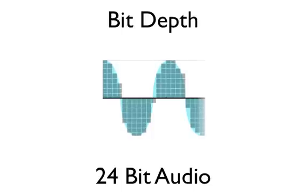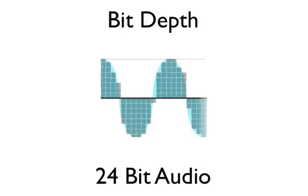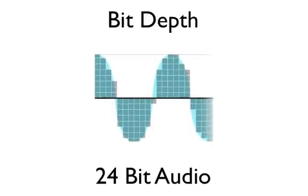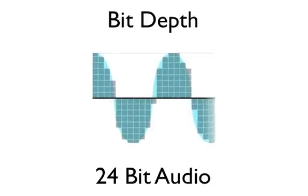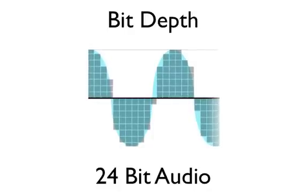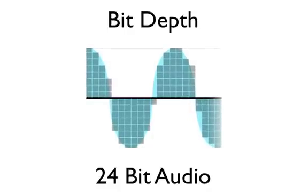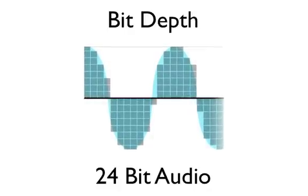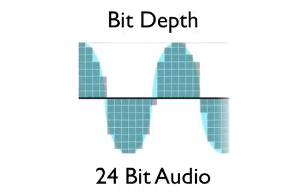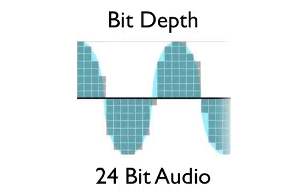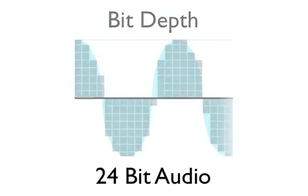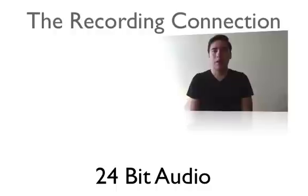When you're recording, it's usually a good idea to record at the highest bit depth and sample rate possible — you can always down-sample your CD master. The more data you start out with, the better your final mix will sound. Plus, in the future you'll be able to remix your material without losing too much noticeable quality.